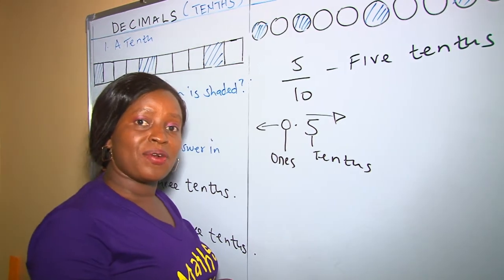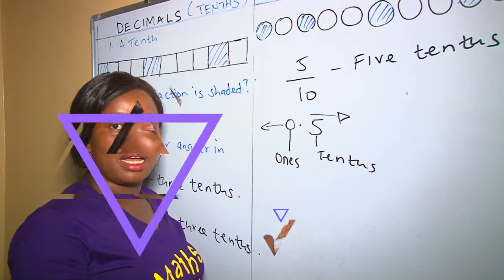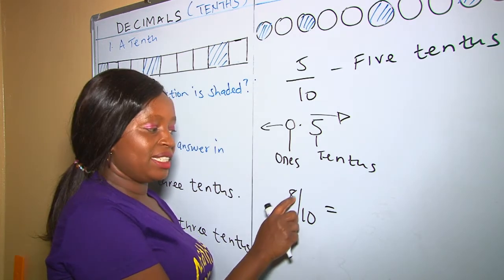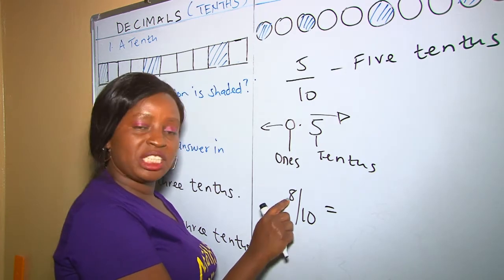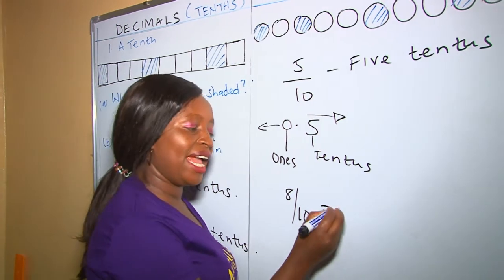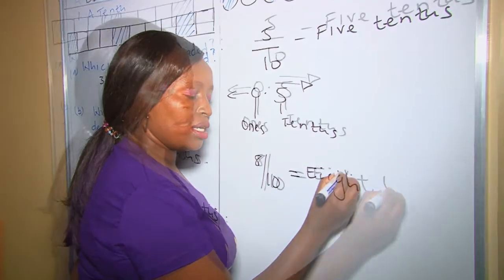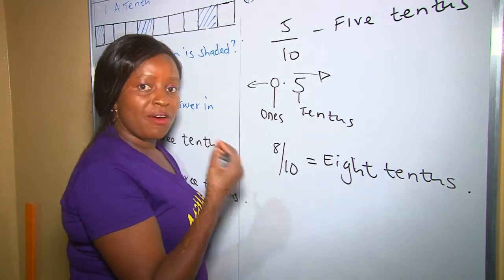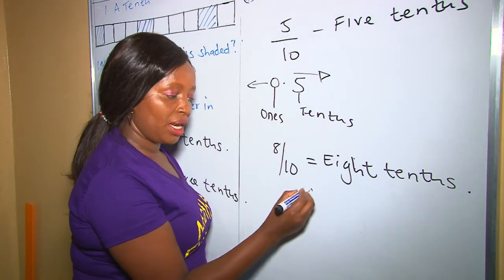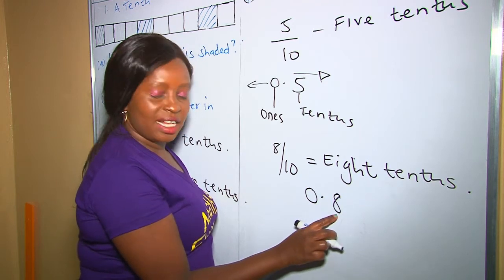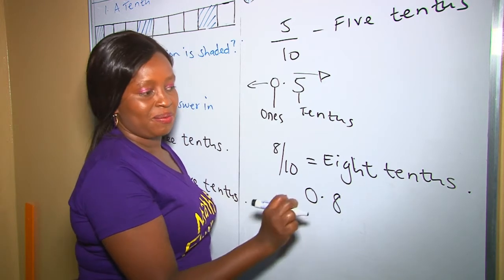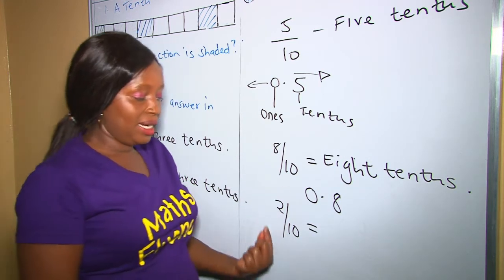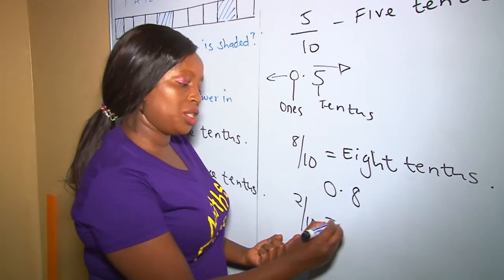Now let's write the following fractions as decimals. To write eight over ten as a decimal, we need to identify the name of this fraction. Eight out of ten in words is 'eight tenths,' so in symbols it shall be 0.8. This is eight tenths as a decimal. The first thing is to identify it in words.